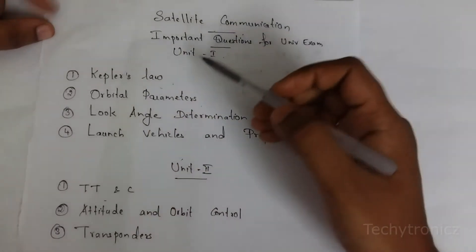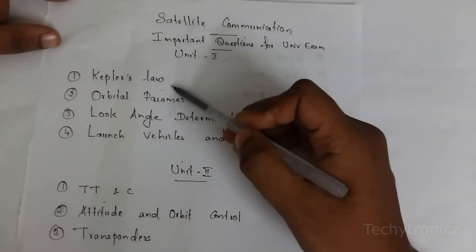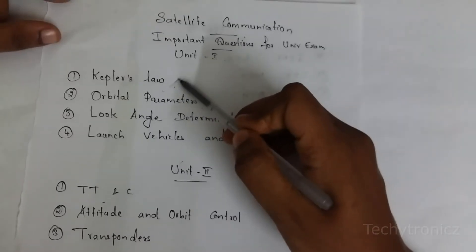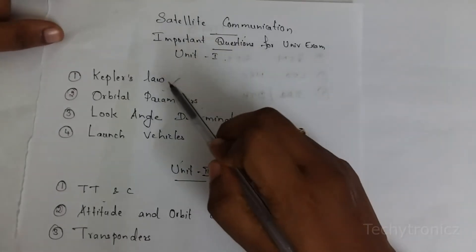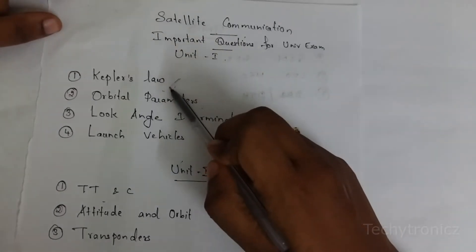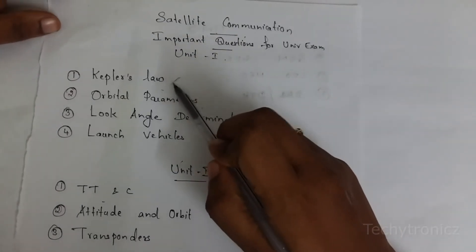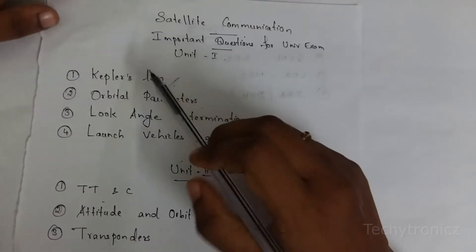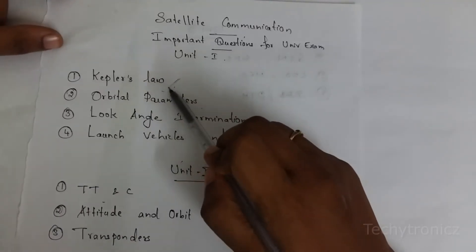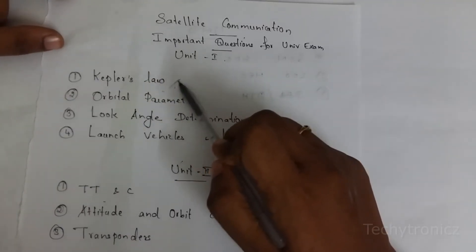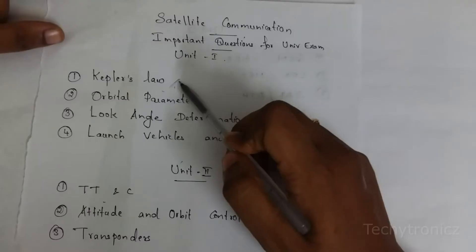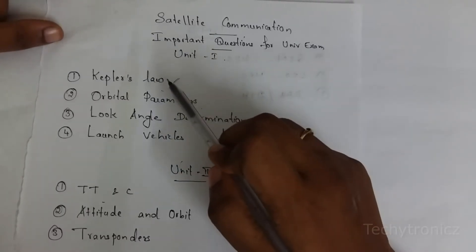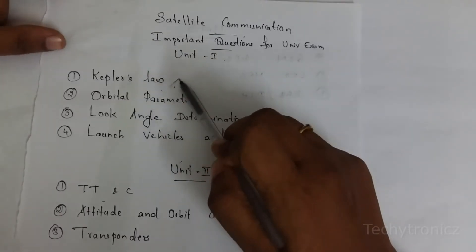In Kepler's law we are having 3 laws. Sometimes they will be asking in part B questions and also you will get it as a 2-mark question. All 3 laws you have to learn.